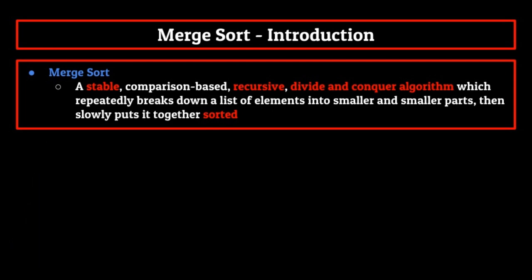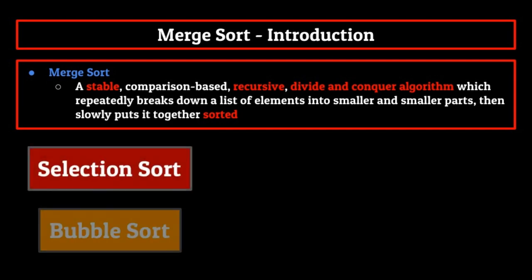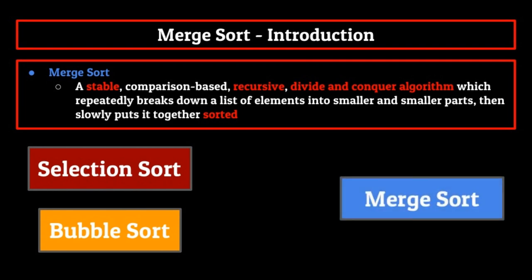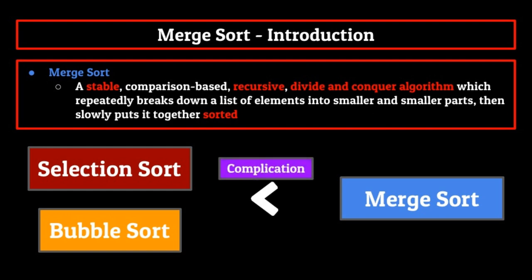This is going to be our first large jump in complexity when it comes to sorting algorithms. With selection sort or bubble sort, the algorithms could get complicated at times, yes, but nothing to the extent of a sorting algorithm like merge sort. The greater the complexity, of course, comes with the bonus that merge sort is going to be a lot more efficient than those algorithms. But we'll get to that later.